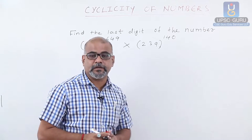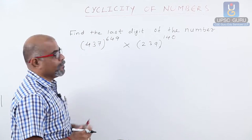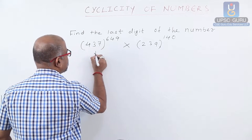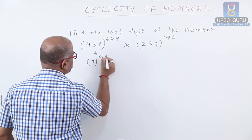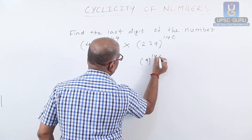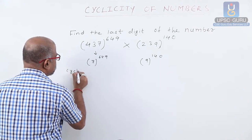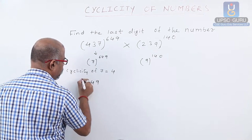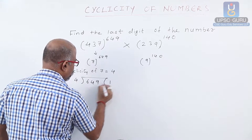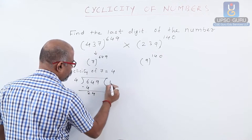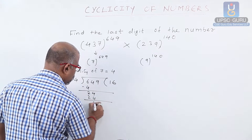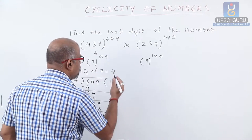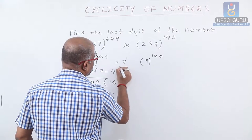Next problem: find the last digit of 437 to the power 649 into 239 to the power 140. The last digit is nothing but 7 to the power 649 multiplied by 9 to the power 140. Cyclicity of 7 equals 4. Dividing 649 by 4, the remainder is 1. That means the last digit equals 7 to the power 1, which equals 7.